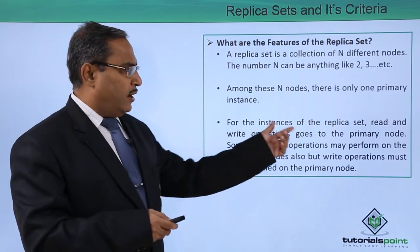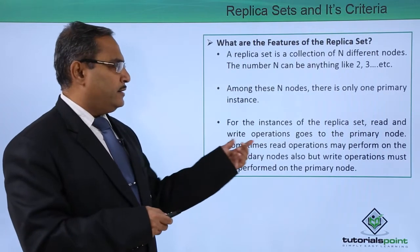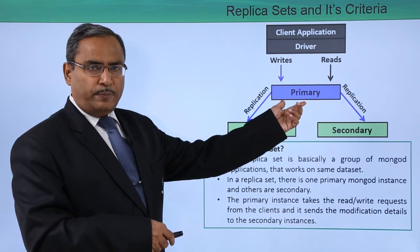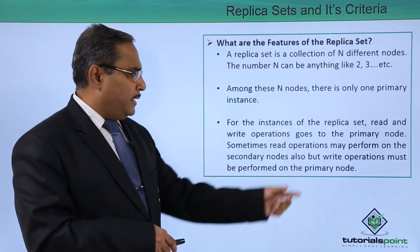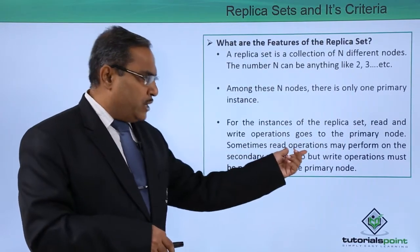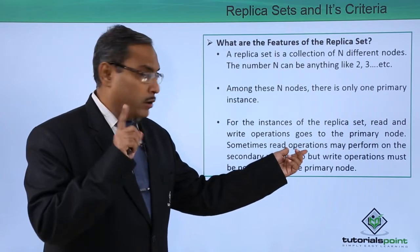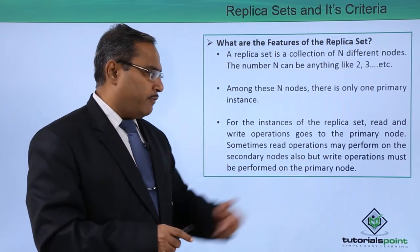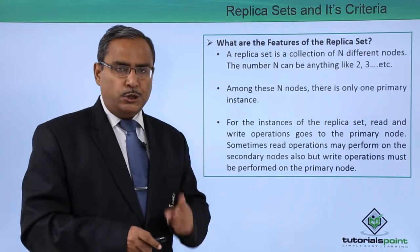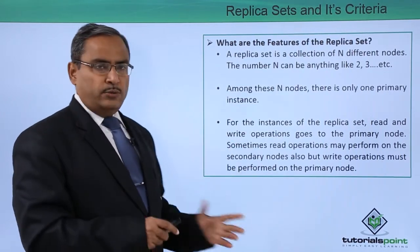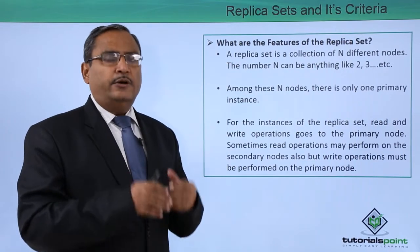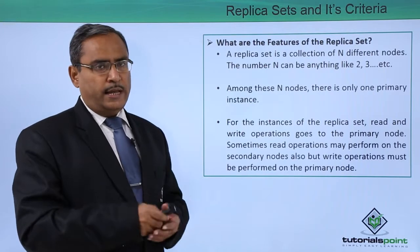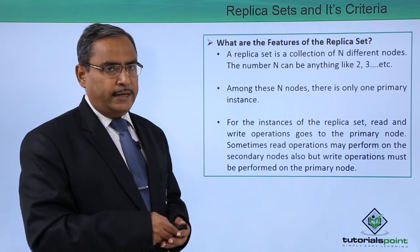For the instances of the replica set, read and write operations go to the primary node. Read operations may also be performed on the secondary nodes, but write operations must be performed on the primary node only. So the restriction is: reads and writes go to the primary, but sometimes only read operations can directly access the secondary instances.